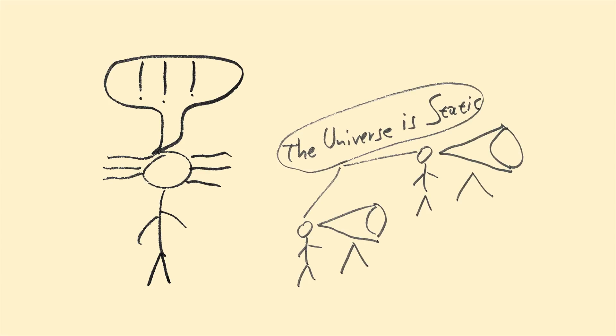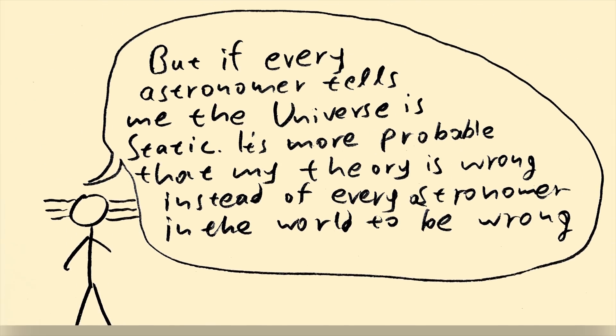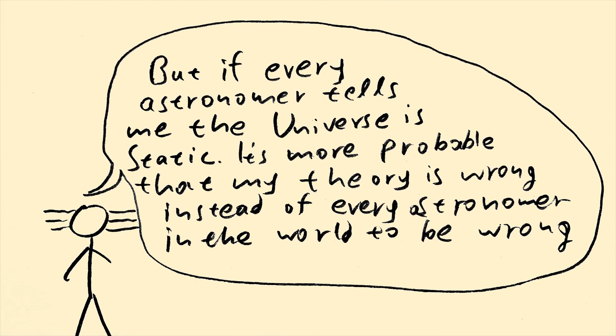But this was bothering Einstein a lot. You see, if there was really no start to the universe, then his theory predicted that gravity would eventually pull all matter into an infinitesimal point. So he thought, but if every astronomer tells me the universe is static, it's more probable that my theory is wrong instead of every astronomer in the world to be wrong.